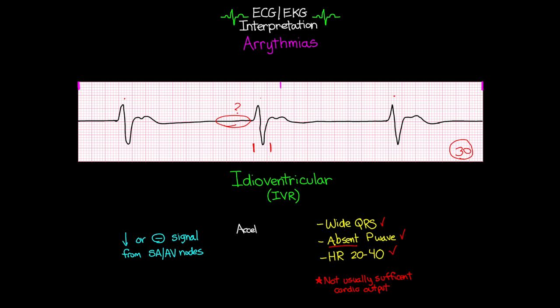The first variation is called accelerated idioventricular rhythm, or AIVR. Just like with the junctional rhythms, everything about this rhythm is going to be the same as our idioventricular rhythm, other than we're going to have a heart rate between 40 and 100.